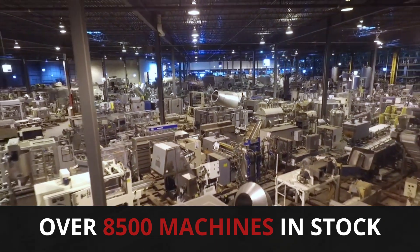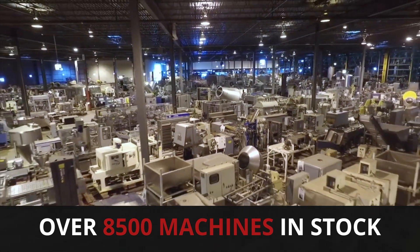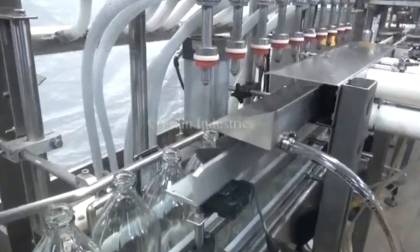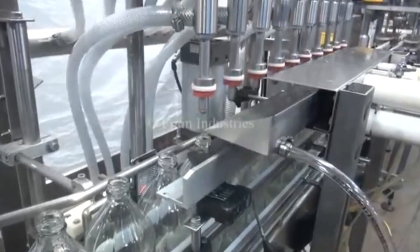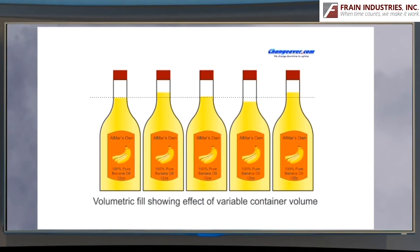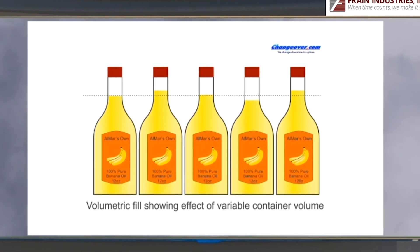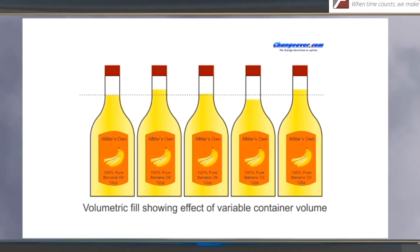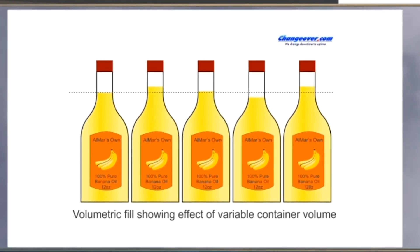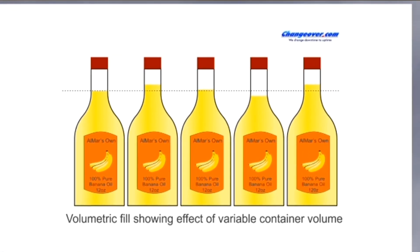The importance of selecting the right machine for your packaging application cannot be overstated. Liquid filling machines are a good example. If you want all of your containers to be filled to a specific level, then only an overflow type filler can provide a consistent fill level in all containers.